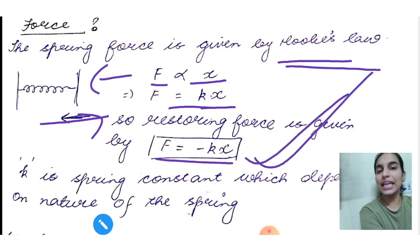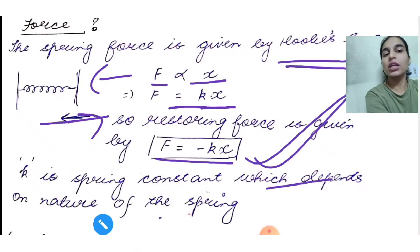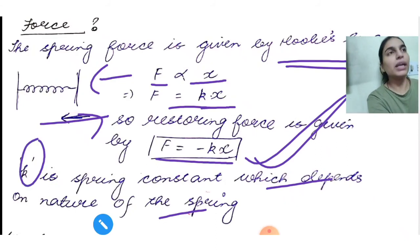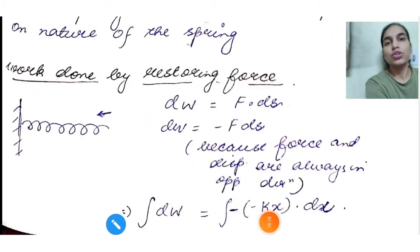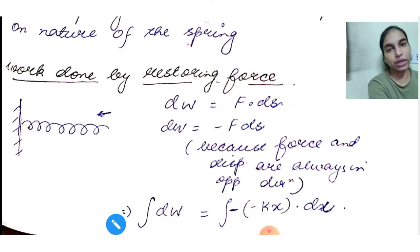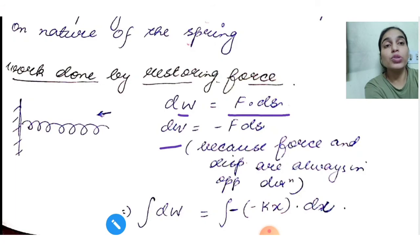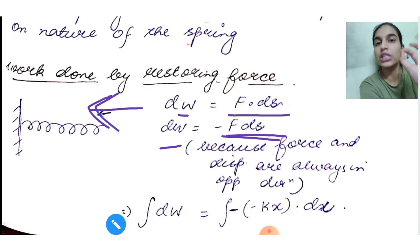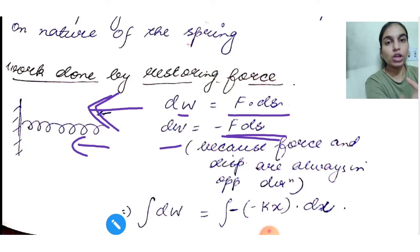Now we find the work done by the spring's restoring force. Using dW = F·ds, since the restoring force (−kx) and displacement are in opposite directions (theta = 180°), dW = −F ds. Substituting the restoring force F = −kx, the two negatives give a positive: dW = kx dx. We integrate from the relaxed state (x = 0) to displacement x.